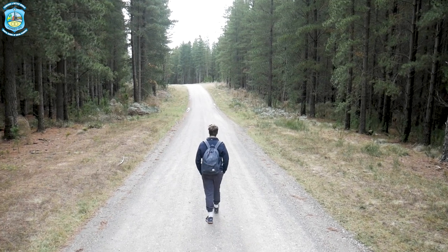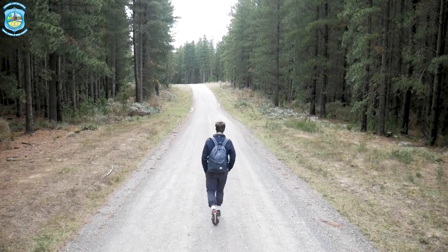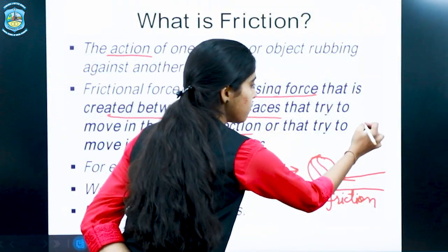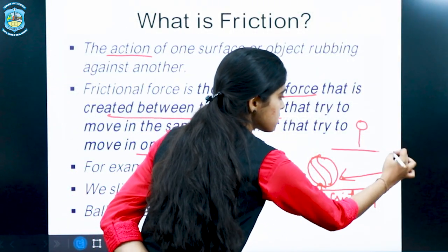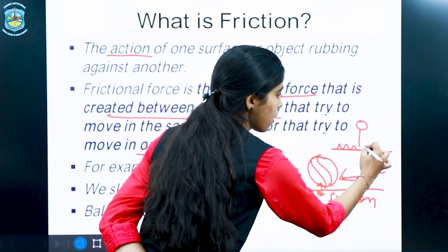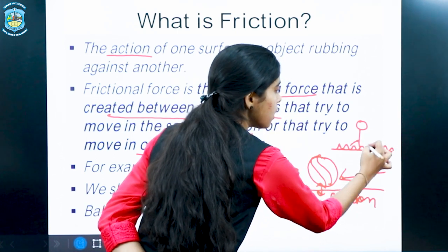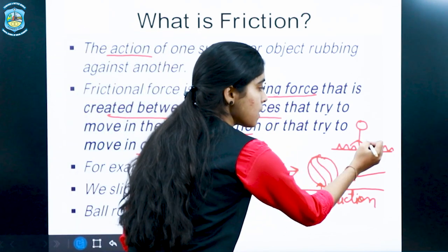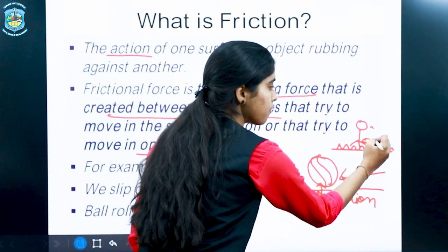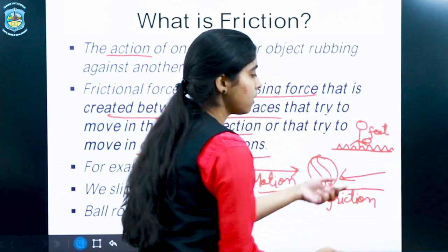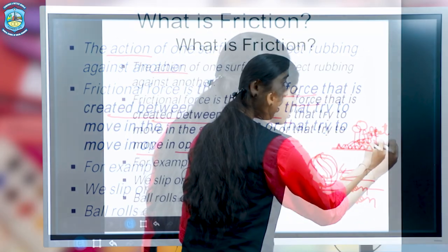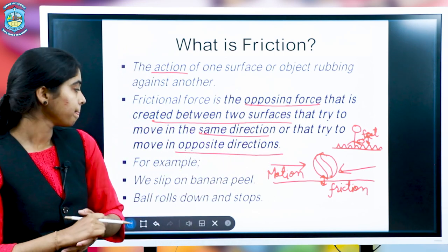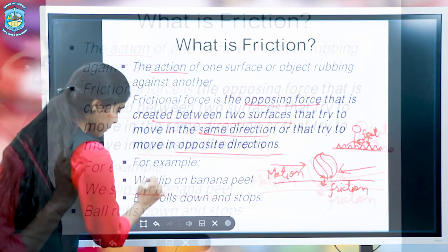Why are we able to walk? We are able to walk just because of friction. The surface is rough and we are able to walk on a rough surface because of friction. There is friction between our feet and the ground, and that is why we are able to walk.